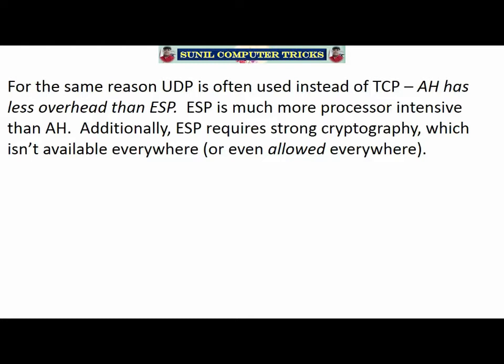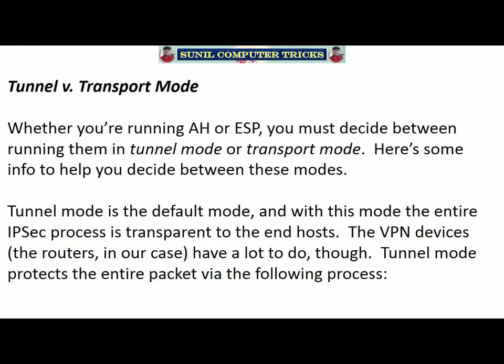There's another reason: ESP requires what we call strong cryptography, and that is not available everywhere — not on every Cisco or non-Cisco device. It's not even allowed everywhere. It's actually illegal to have certain devices with strong cryptography in certain parts of the world. When you start up a device that has strong cryptography, it'll have a warning beyond the usual copyright notices telling you there are places in the world where you're not allowed to use it, and it'll give you a URL to check. So that is another reason you might have to use AH instead of ESP.